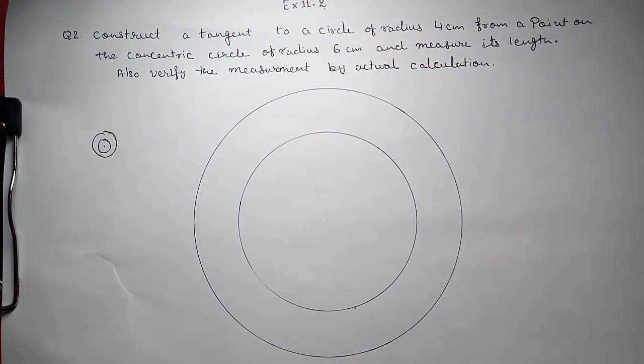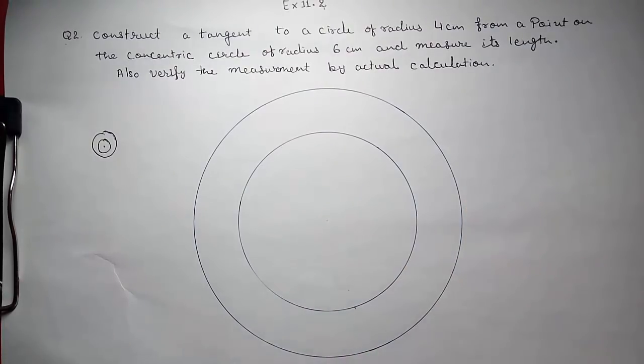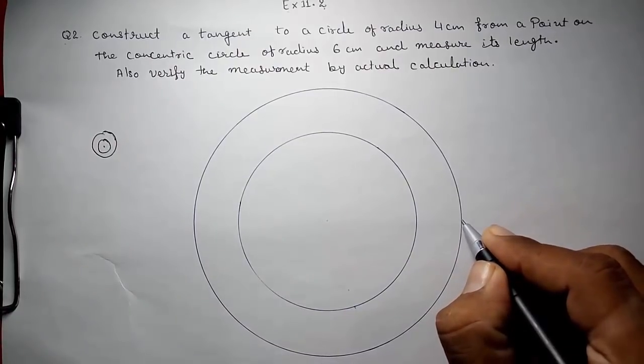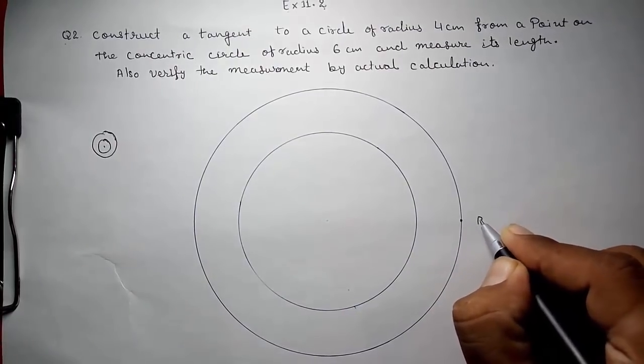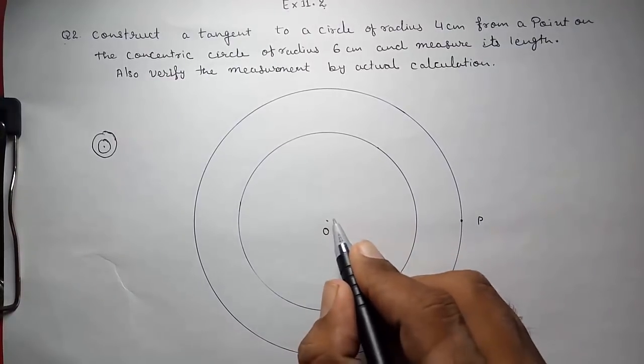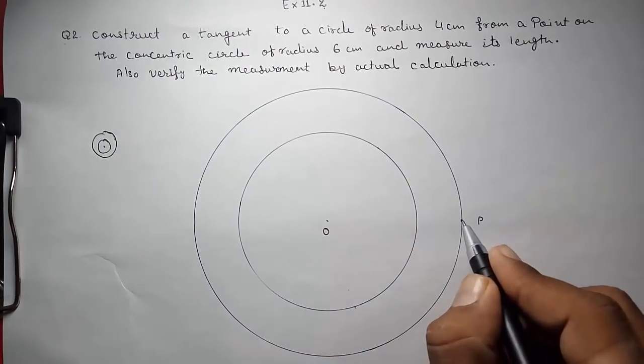Look here. Now this radius is 4 and this is 6. They told us to draw a tangent from a point P on this. They had not given the name, but I am giving the name. And this is our center point O. This radius up to here is 4 and this is 6.